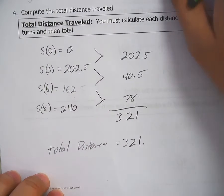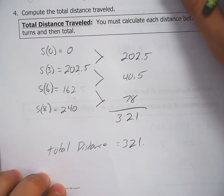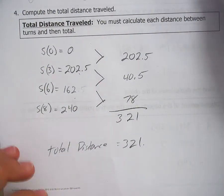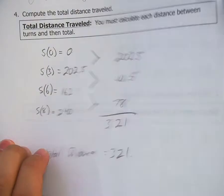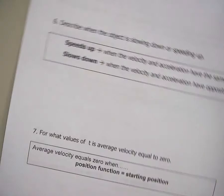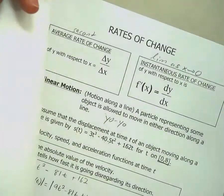Okay. So total distance traveled. Remember, this is always going to be a positive value. Even when your velocity is negative, total distance should always be positive. Distance is never, ever, ever negative.